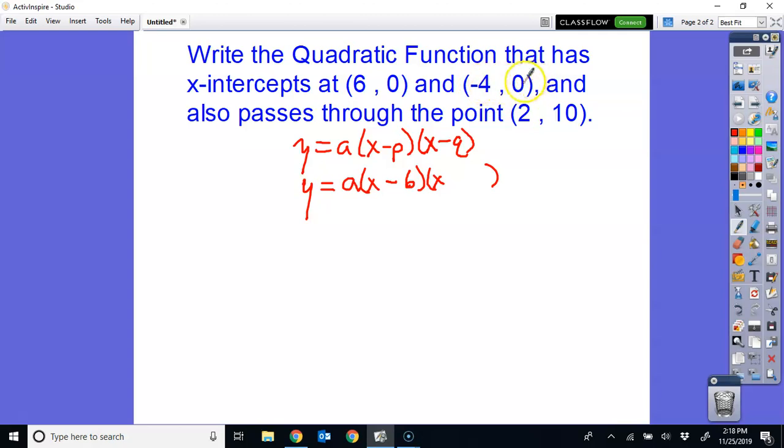The same thing applies for negative 4 being one of my intercepts. x plus 4 would be the thing that is equal to 0. So essentially, when you know the intercepts, you also know the factors in this factored form or intercept form because if you set this equal to 0, you'd get 6. If you set this equal to 0, you would get negative 4.